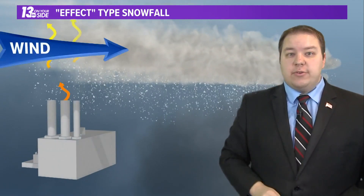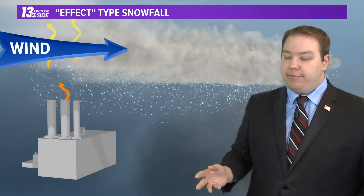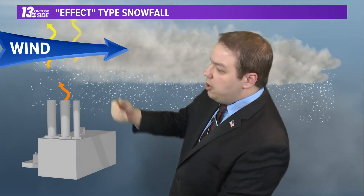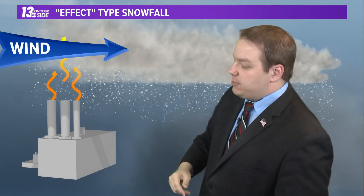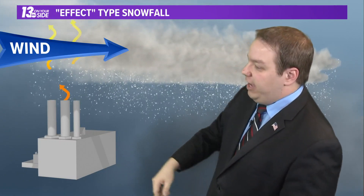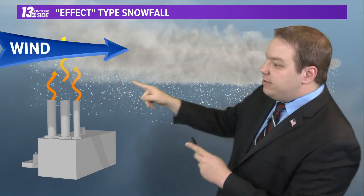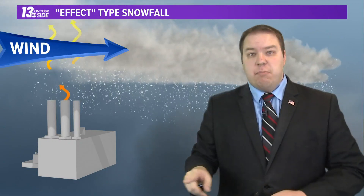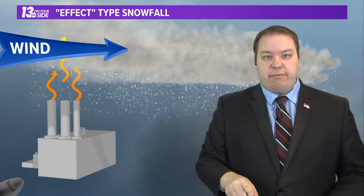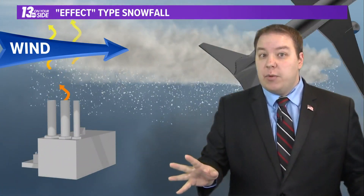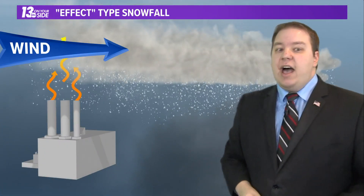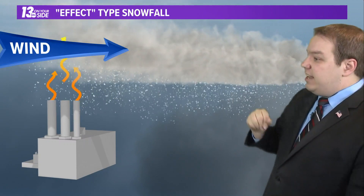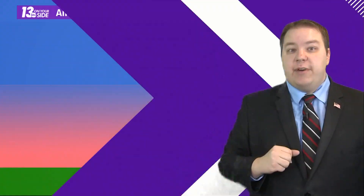One of those could be something called power plant effect snow. Basically, the moisture that comes out of the cooling towers or smokestacks of a power plant condenses and forms a band of snow. This will be narrow, but looks mostly like normal lake effect snow. That's not what we were seeing near Dallas — that was, again, airplane effect snow.